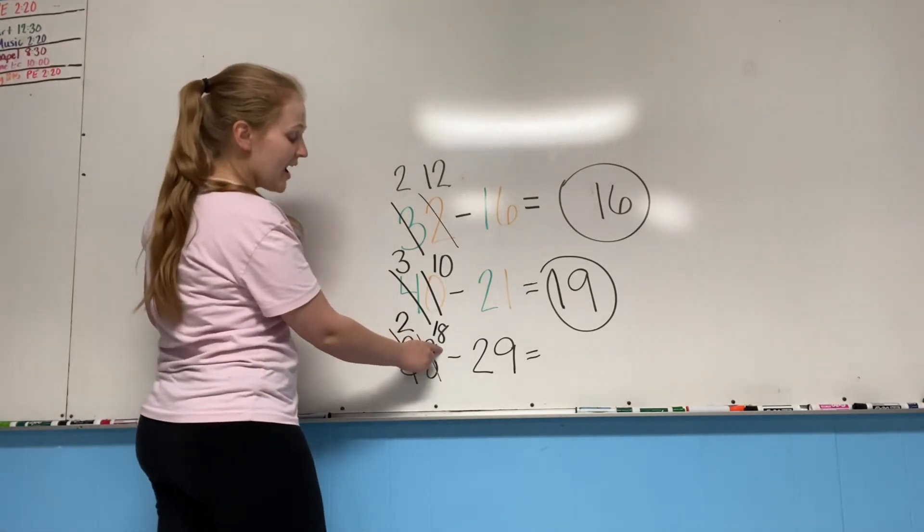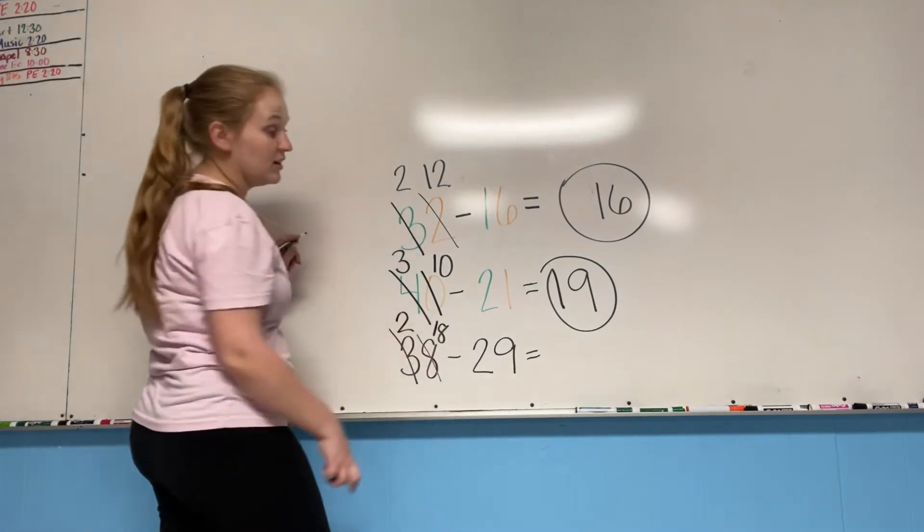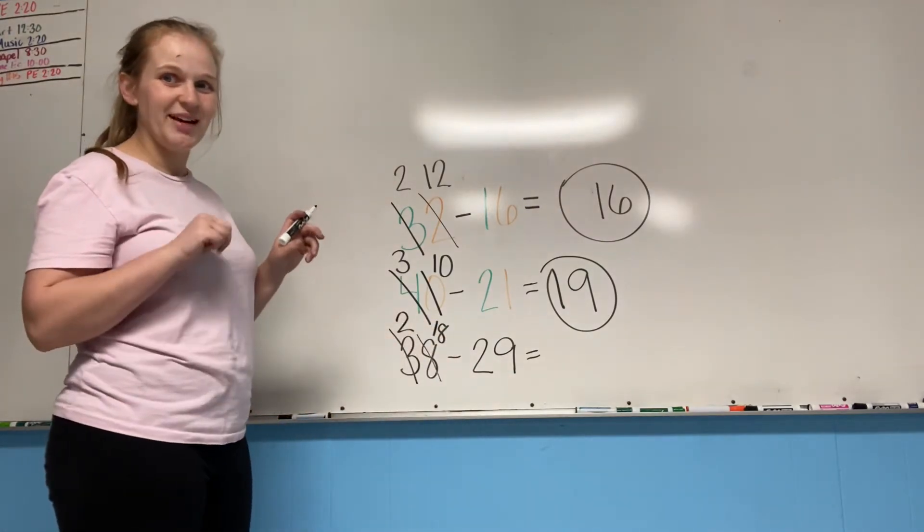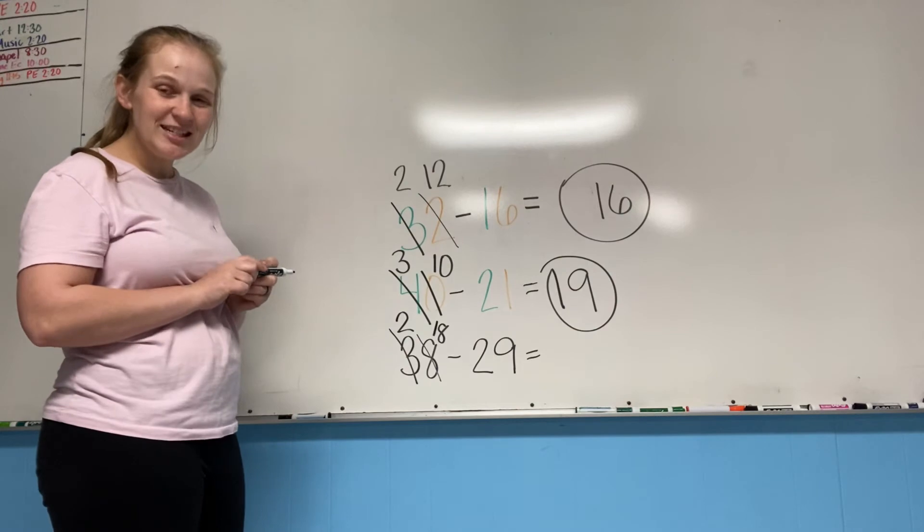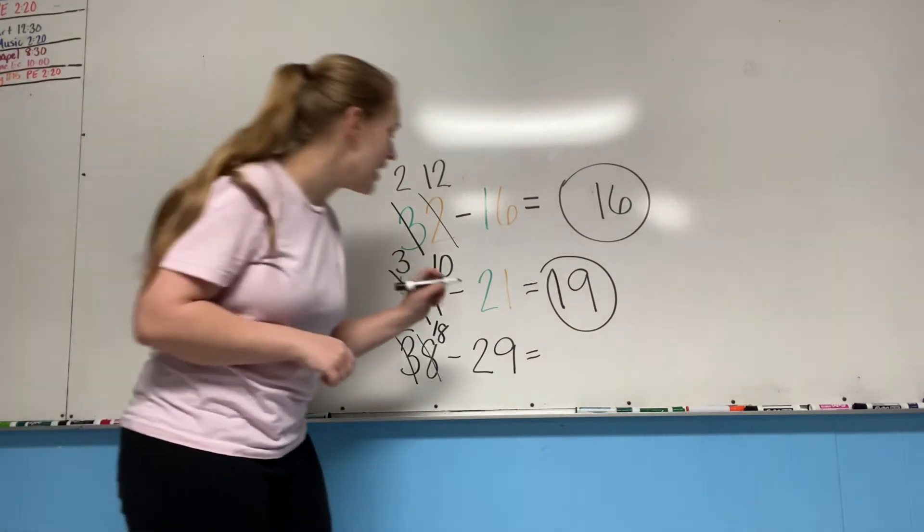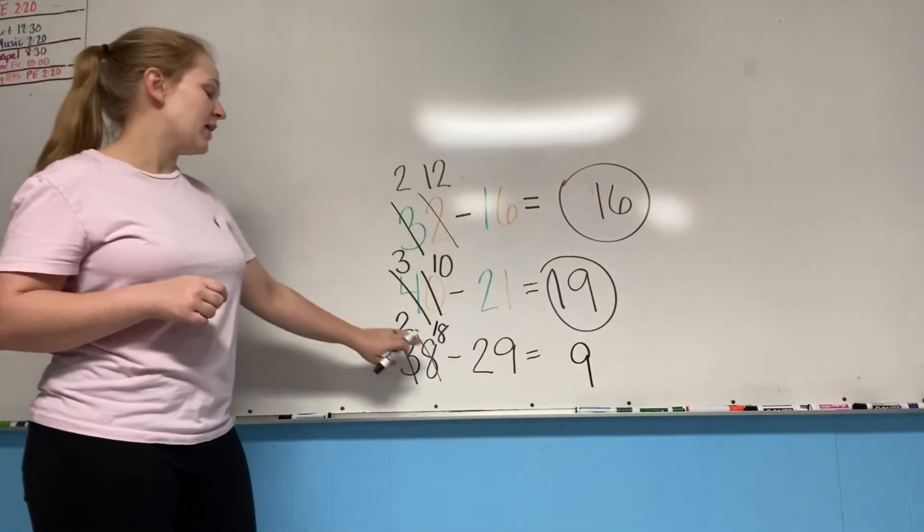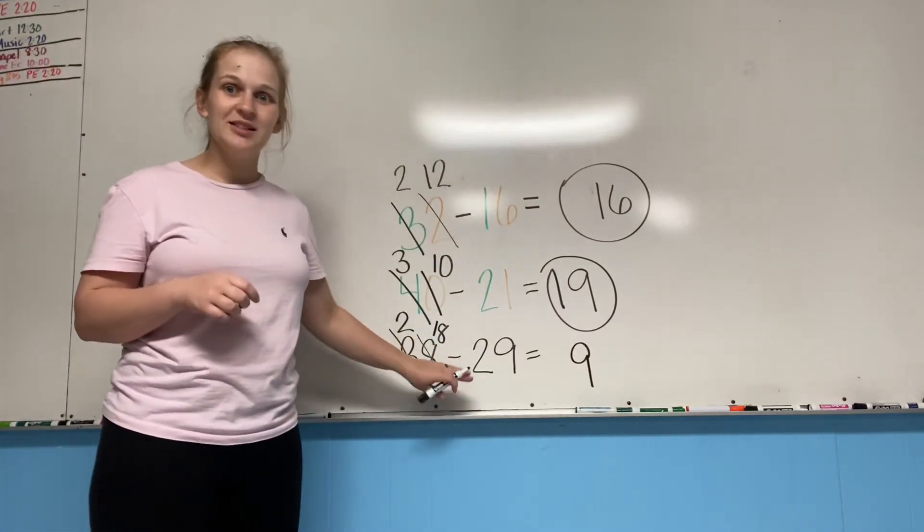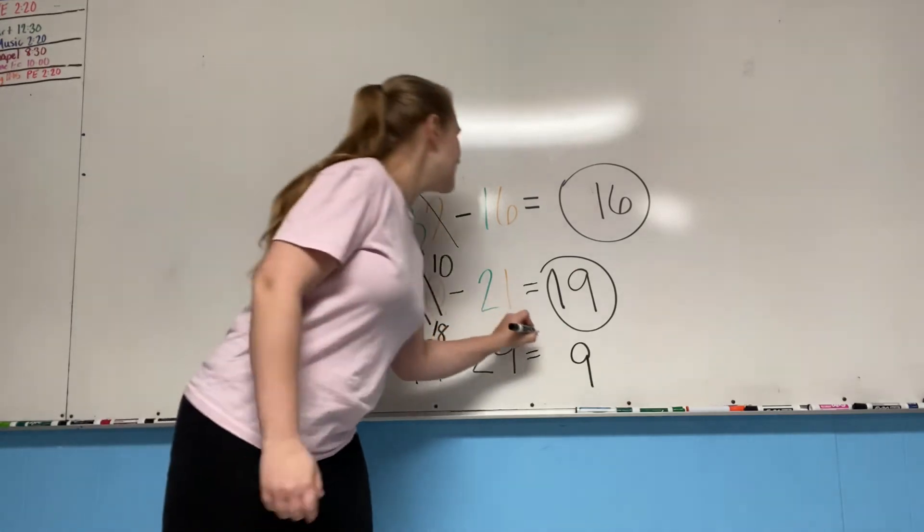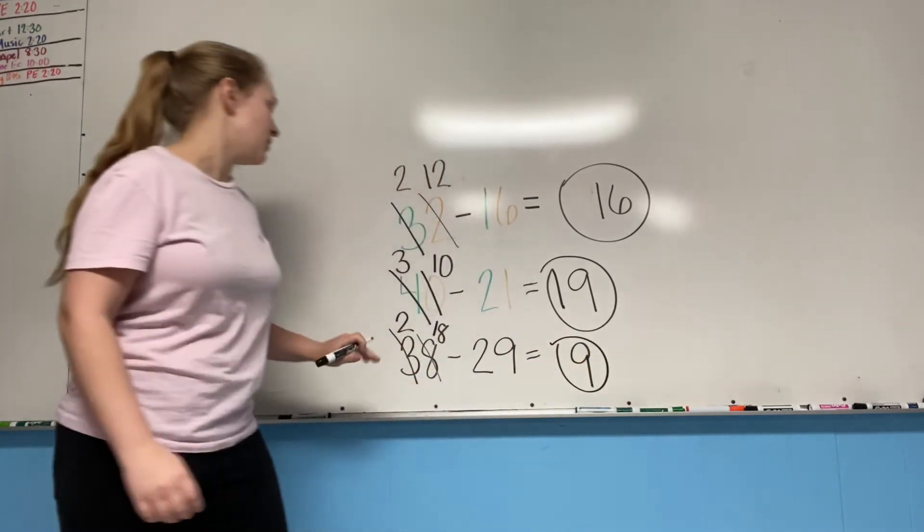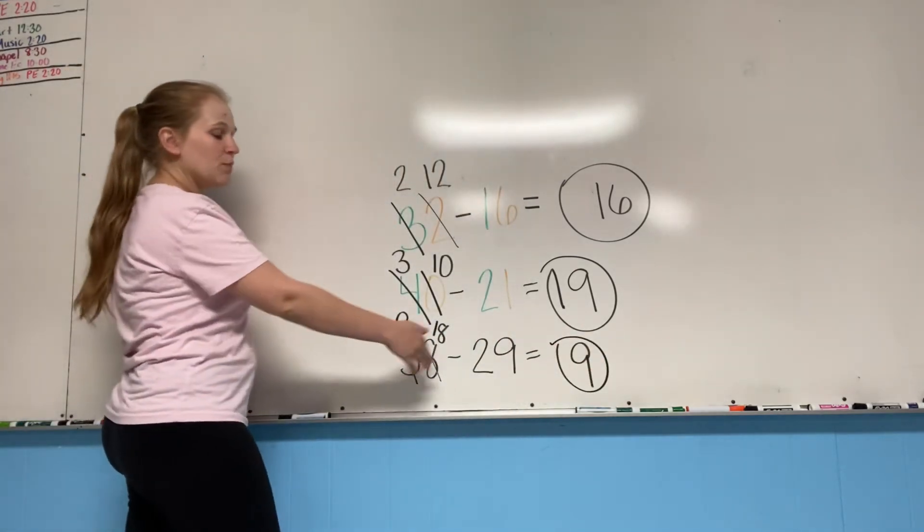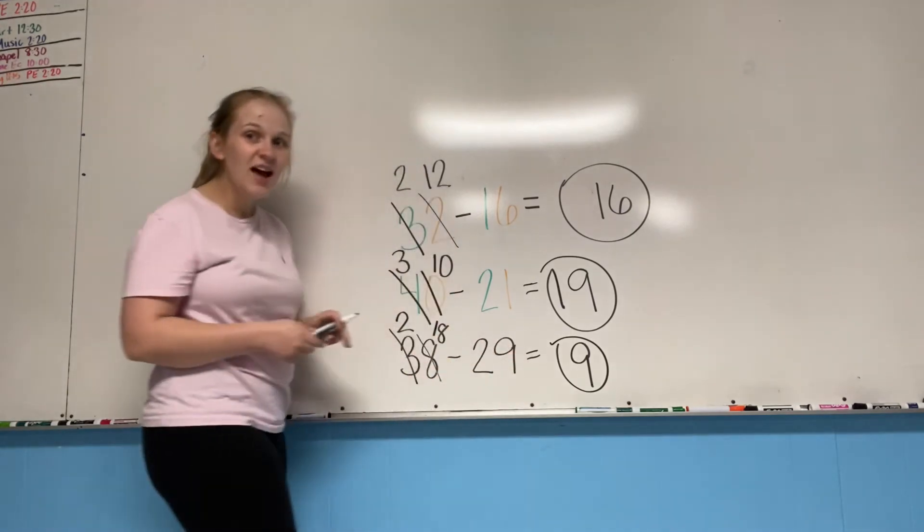All right. Now our ones place again. 18 minus nine. I'll give you a second. You can get it. 18 minus nine equals nine. Very good. And two minus two equals zero. So nine is our answer. So 38 minus 29 equals nine.